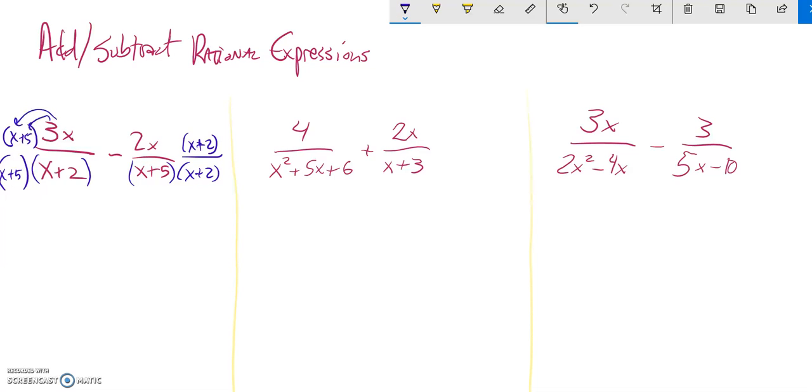Up top, I'm going to distribute that 3 into there, so I have 3x squared plus 15x, and that's over x plus 5 times x plus 2. Then here, I'm going to distribute that 2x, so I have 2x squared plus 4x over x plus 5 times x plus 2.